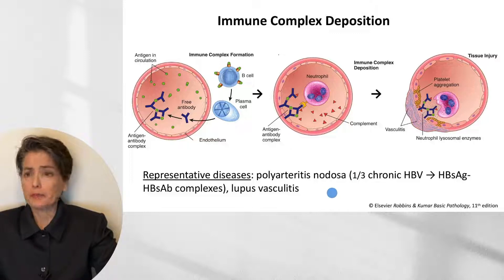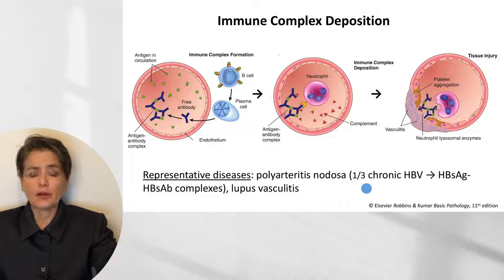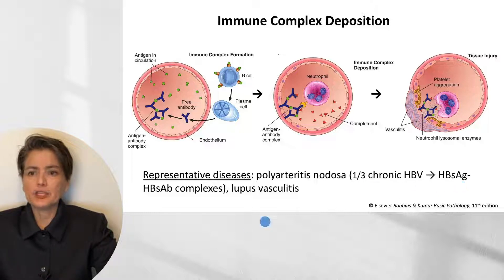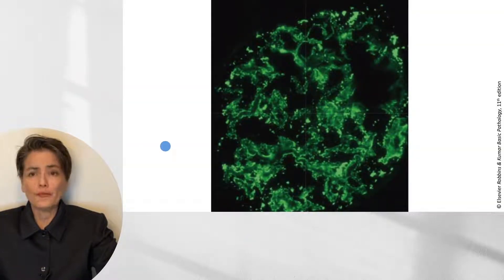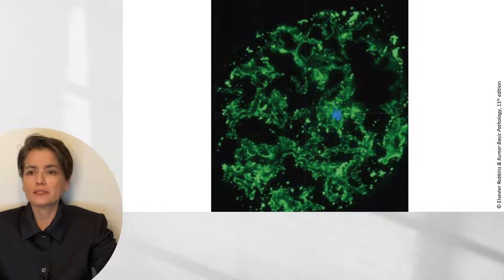Representative diseases associated with immune complex deposition include polyarteritis nodosa — in which about a third of patients have chronic hepatitis B virus infection, and it is the HBsAg and HBsAb complexes that cause this condition — and lupus vasculitis, due to the abundant autoantibodies seen in that condition. Here is an example of immune complex deposition in a glomerulus, showing the granular appearance due to somewhat random deposition based on flow and local architecture.